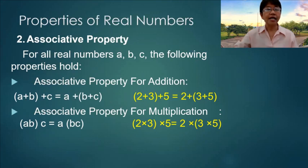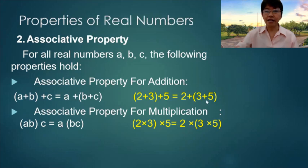The quantity a plus b plus c is equal to a plus the quantity b plus c. For example, 2 plus 3 plus 5 is equal to 2 plus the quantity 3 plus 5. Whichever you add first, it doesn't matter — as long as you are adding, the answer will be the same.